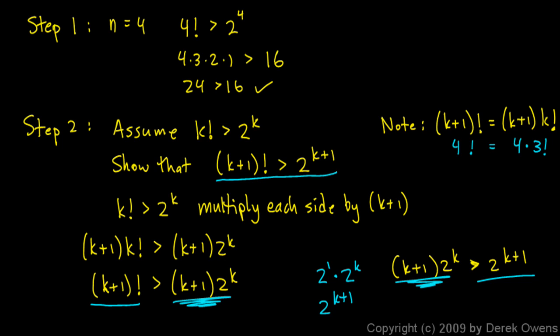So there you have it — another example of using mathematical induction to prove a statement about natural numbers. In this case, we proved that if n is greater than or equal to 4, then n factorial is always greater than 2 to the n.